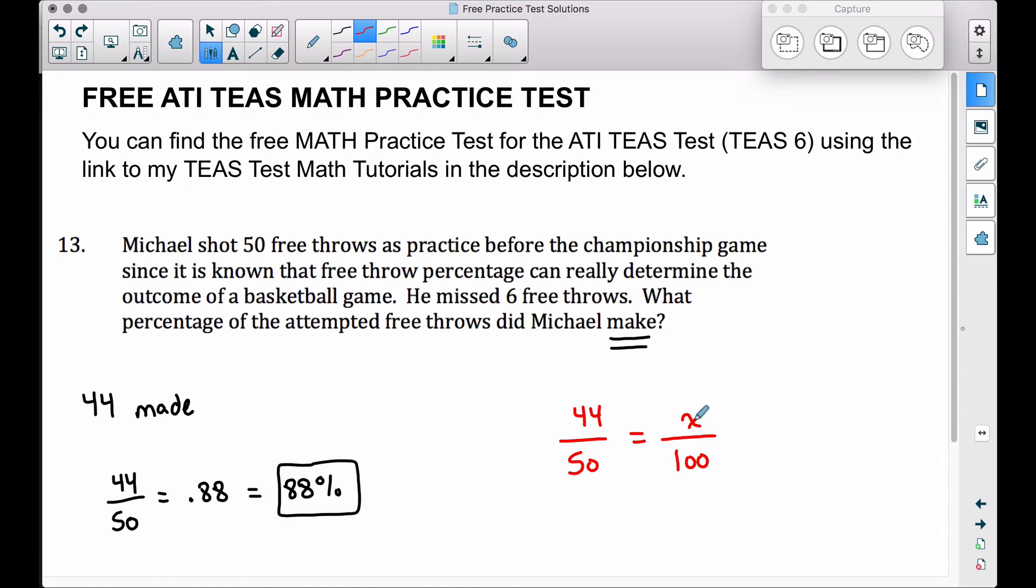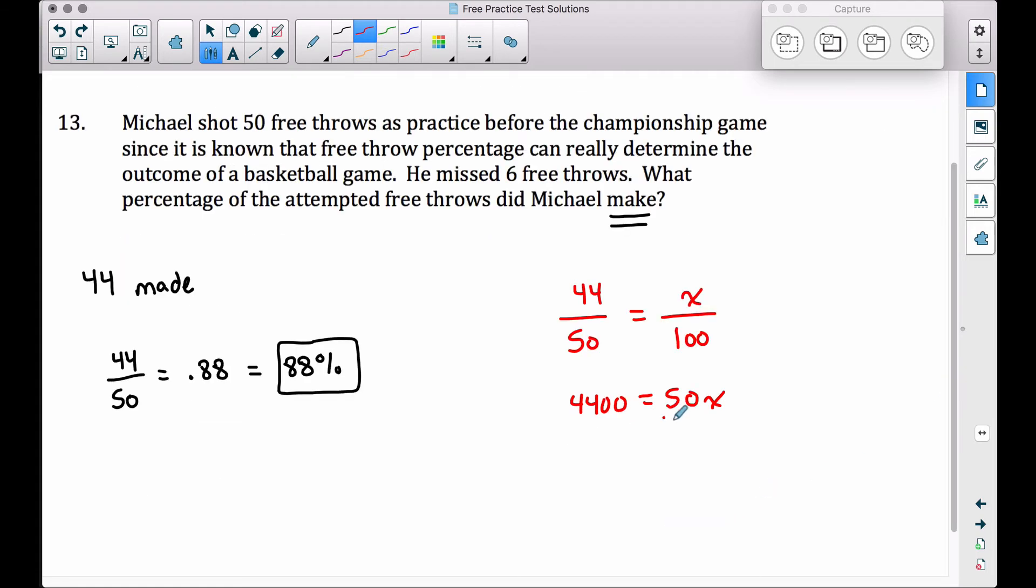Because we're talking about it being out of 100, a percent is always something out of 100. If we cross multiply, 44 times 100 is going to be 4400. Cross multiplying the other way, we have 50 times x, which is 50x. Dividing both sides by 50 to get x by itself - this is a very common way of solving proportions.